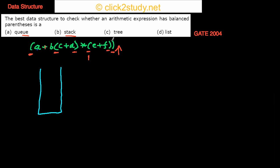Suppose I didn't have that last closing parenthesis — I would reach the end but there would still be a symbol in the stack; it wouldn't be empty, meaning there were more left parentheses. Suppose instead there were more right parentheses — in that case the stack would become empty before I reach the end of the input, and when I try to pop there's nothing left. That's how you detect imbalance with a stack, so you definitely don't need a queue.